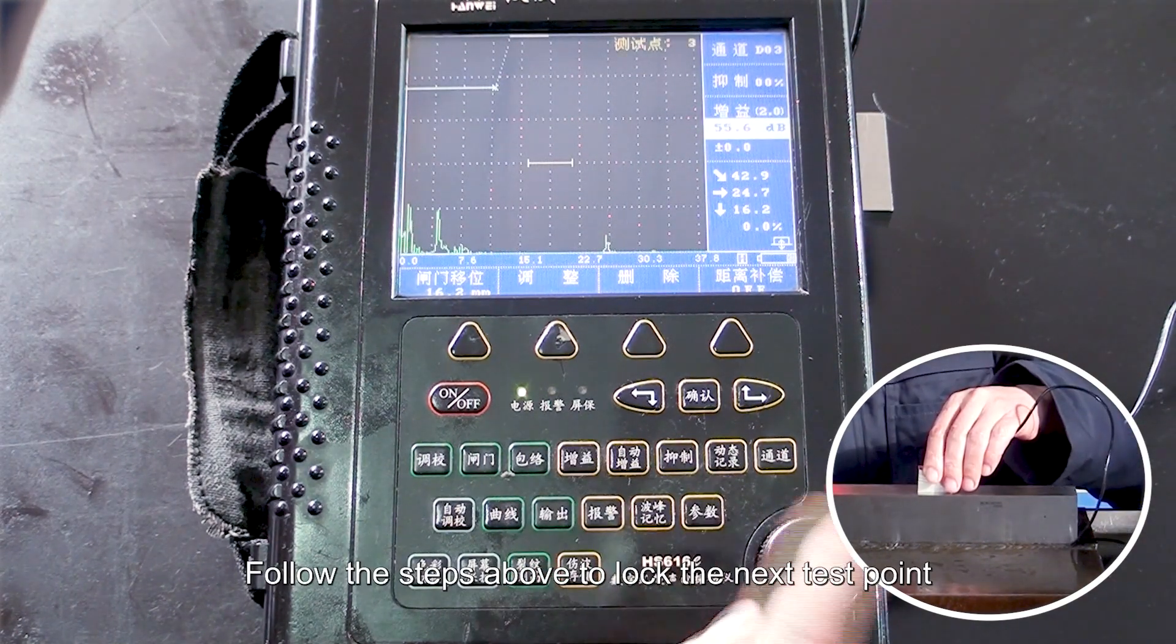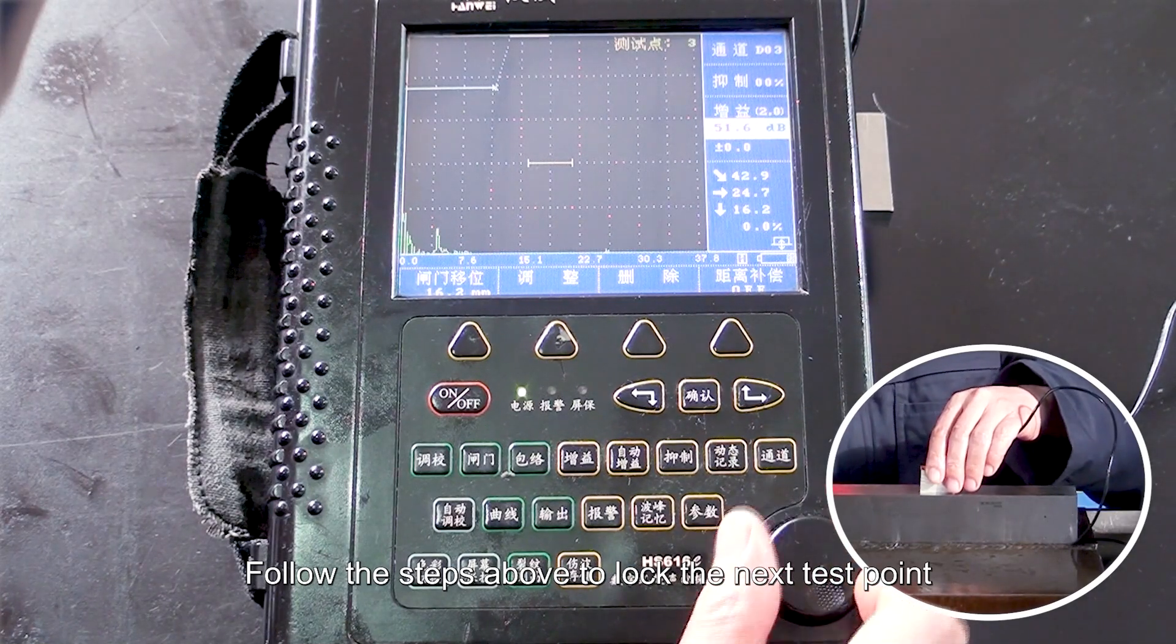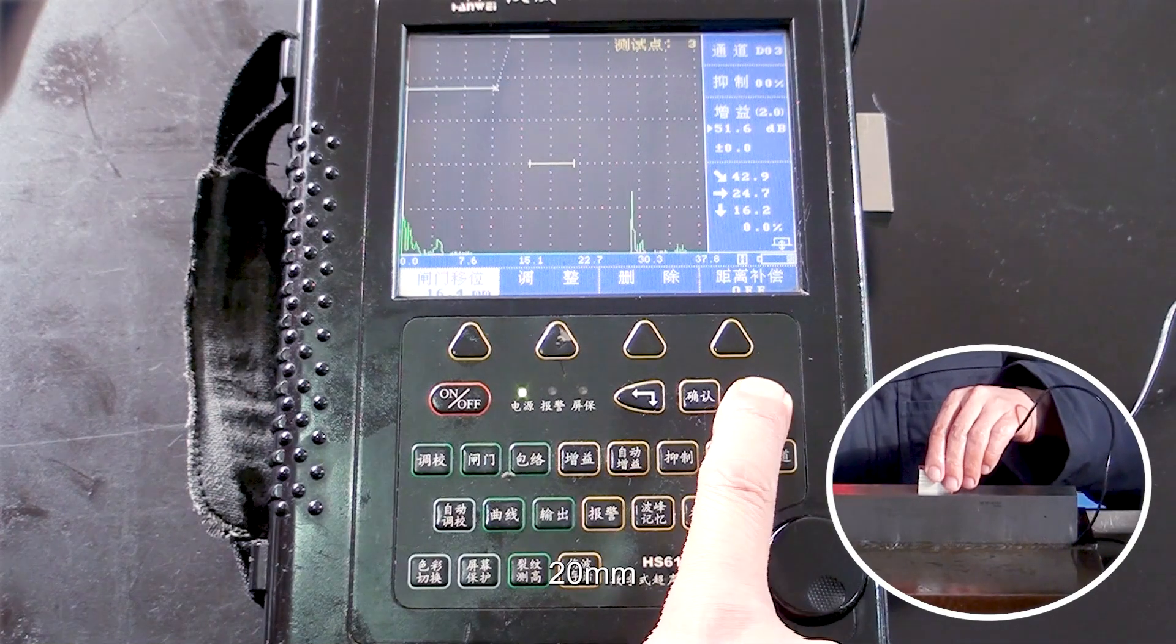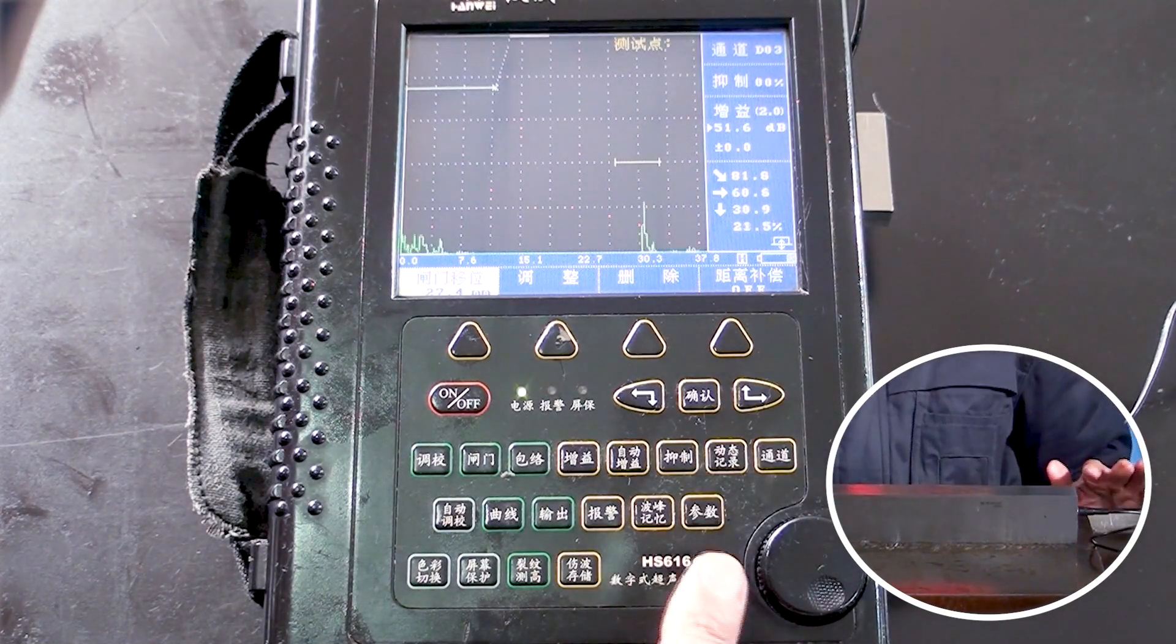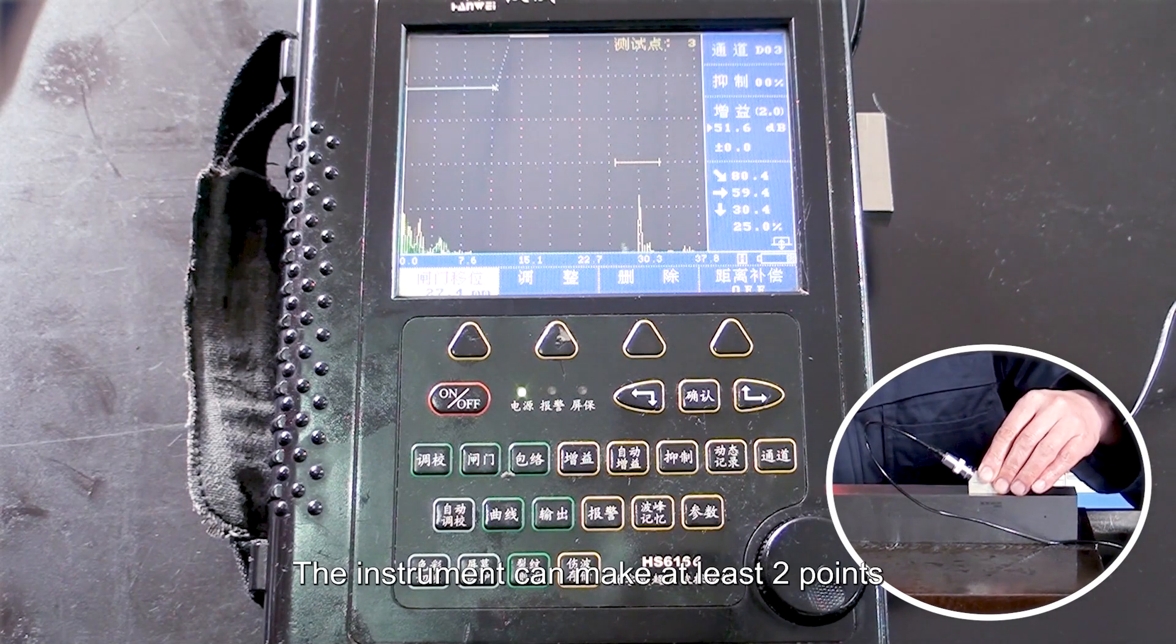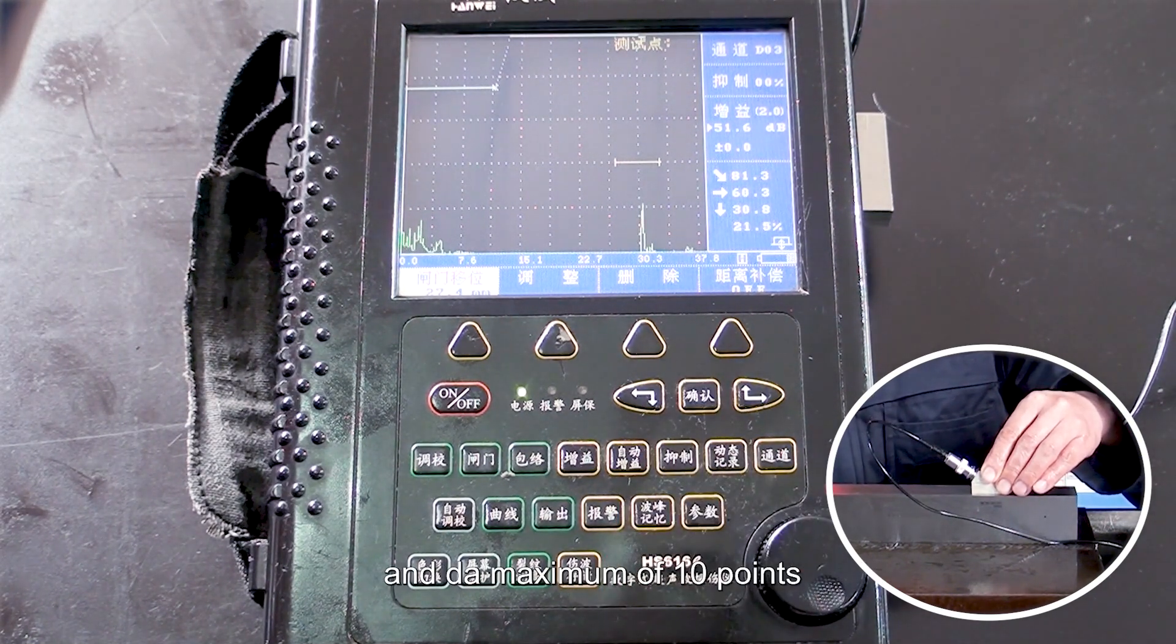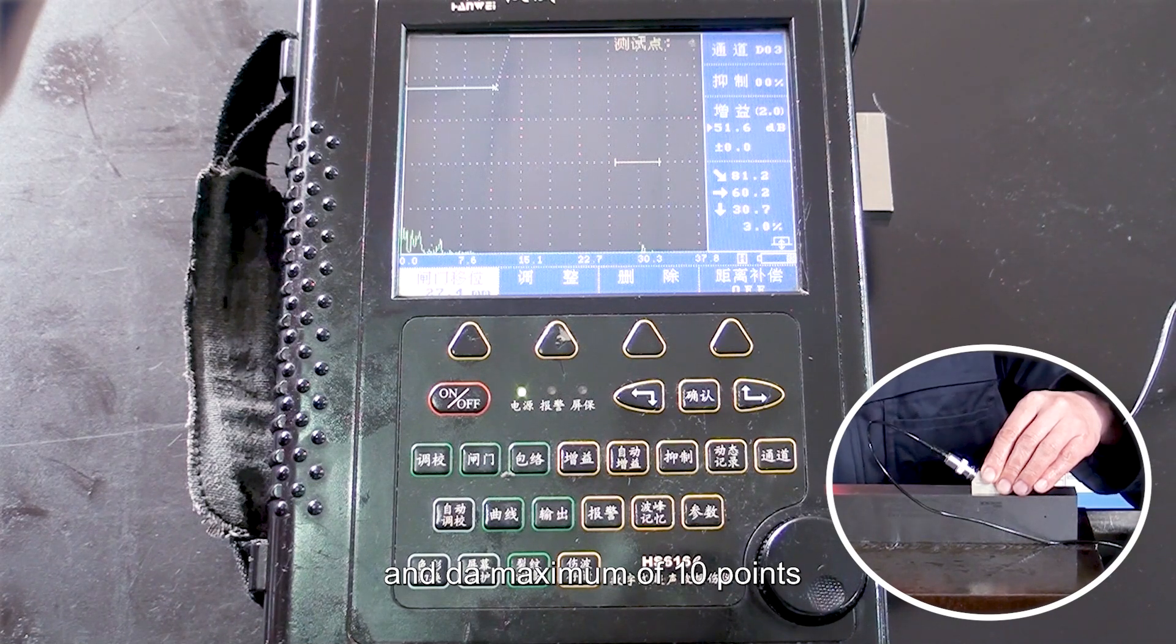Follow the steps above to lock the next test point, 20 mm, 30 mm, 40 mm. The instrument can make at least 2 points and a maximum of 10 points.